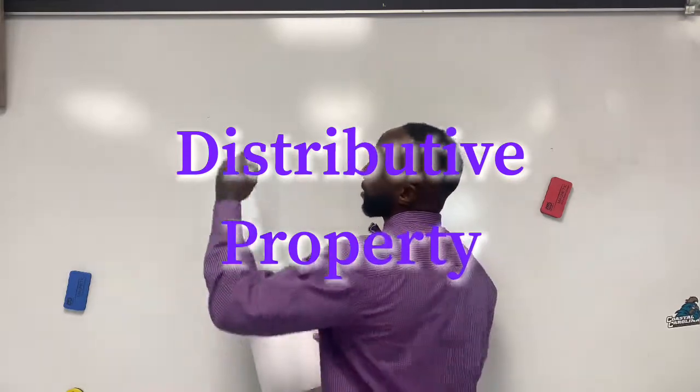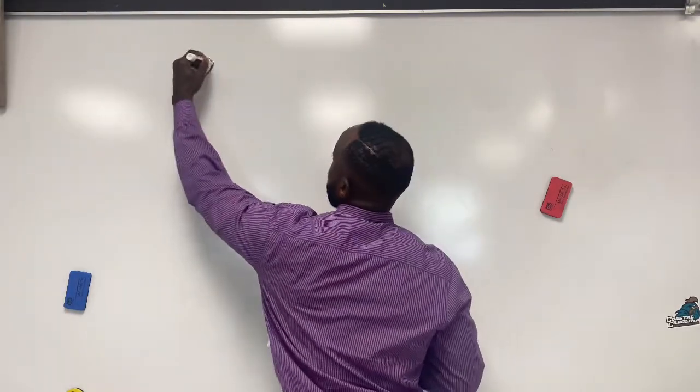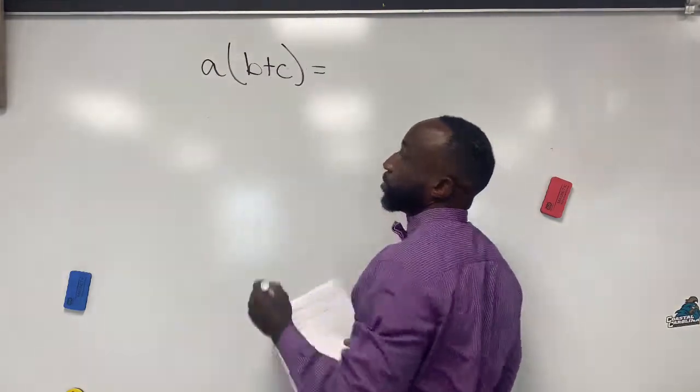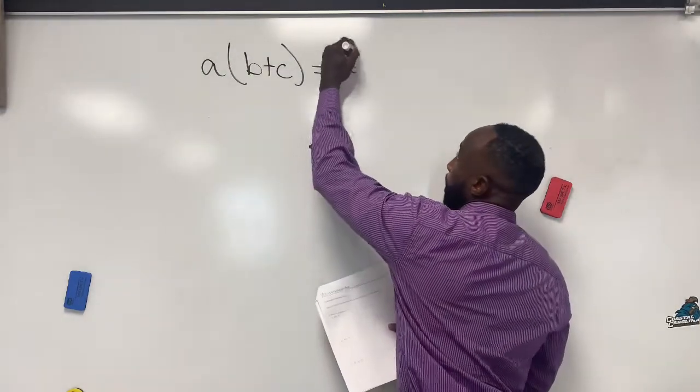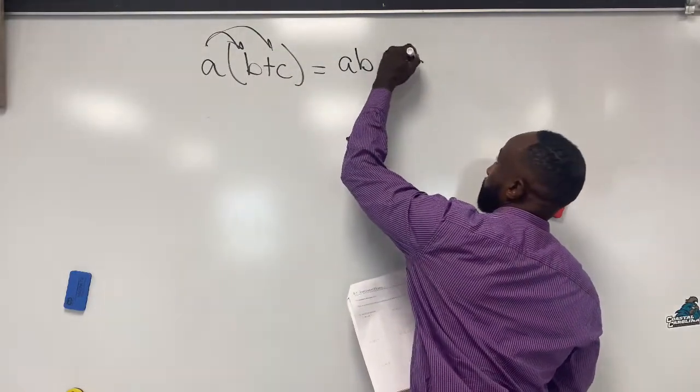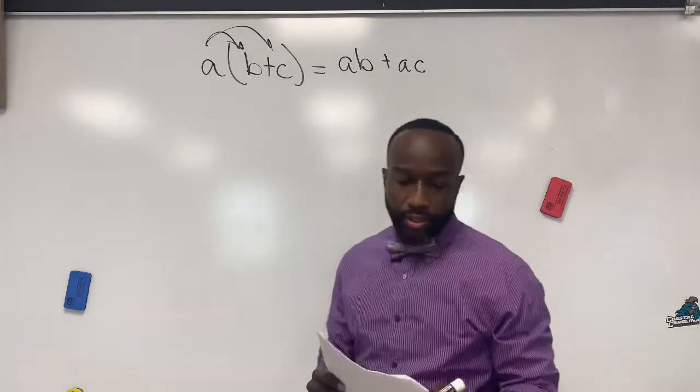Distributive property basically states that any number a times the quantity of b plus c equals a times b plus a times c, right? So essentially, distributive property is multiplication.